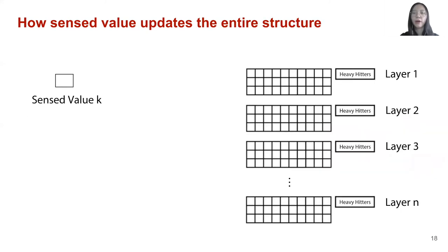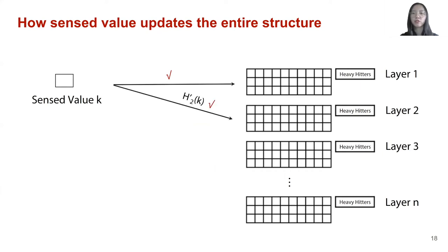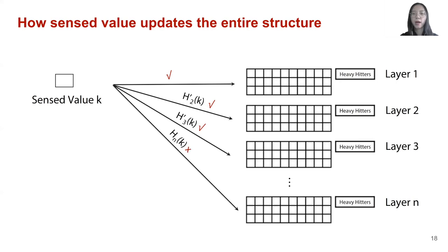Now I will show how sensed value k updates the entire universal sketches. There is another set of independent hash functions h' to decide which layer sensed value k will be sampled in. All values will enter and update the first layer. Then we use hash function h2' to decide whether k will be sampled to and update layer 2. If k is sampled to layer 2, we use hash function h3' to decide whether k will be sampled to layer 3, and the process continues until k reaches the last possible layer. As you can see, more values will be sampled to upper layers, and fewer values will be sampled to lower layers.